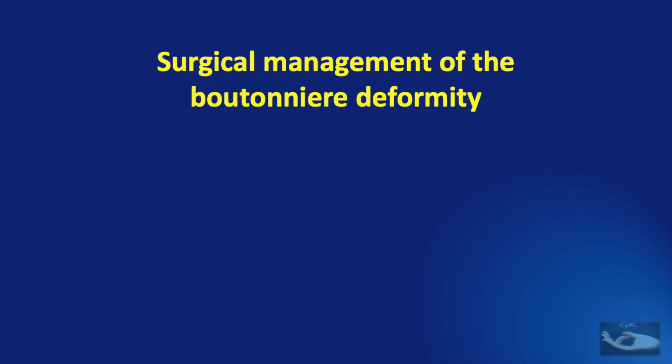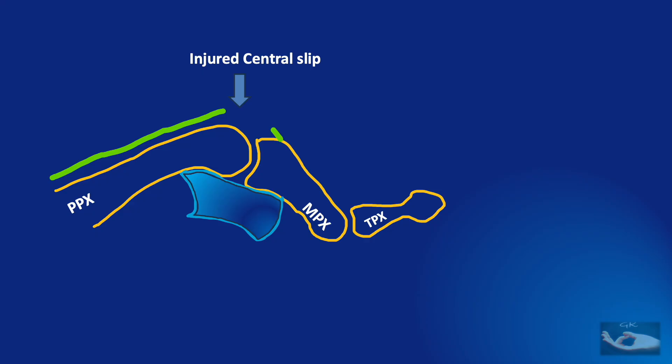Before trying to understand the basic procedures in the surgical management of the boutonniere deformity, it is important that we understand what actually happens. The root cause of the boutonniere deformity is the injured or attenuated central slip. When this central slip gets injured, the proximal interphalangeal joint does not have any force of extension and so it goes into a position of flexion.